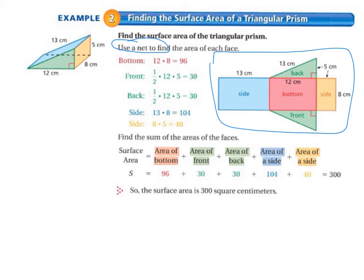So the bottom is 12 by 8, so that's 96. The front and the back are both 1 half by 12 by 5. So let me show you where they got those numbers. Remember, the area of a triangle equals 1 half base times height. So the base of this triangle is 5 centimeters. The height of it is 12 centimeters. So the half comes with the formula. So 12 times 5 is 60, and half of 60 equals 30.